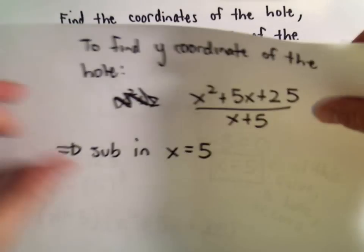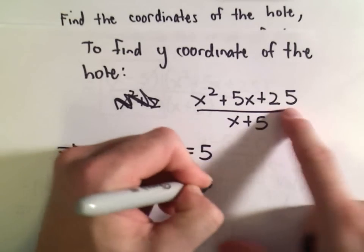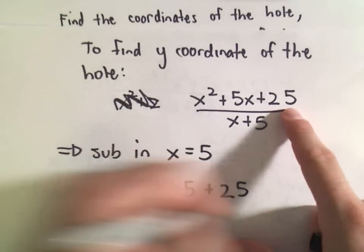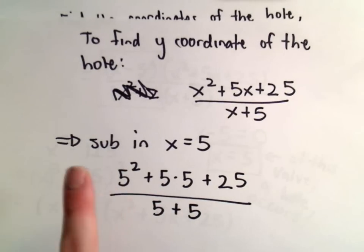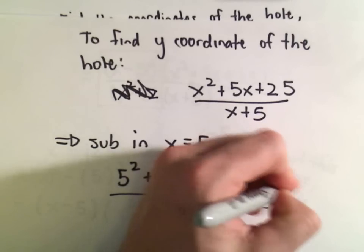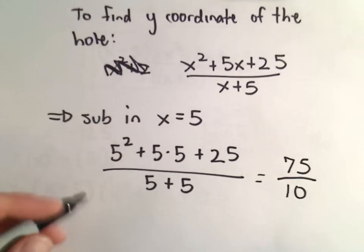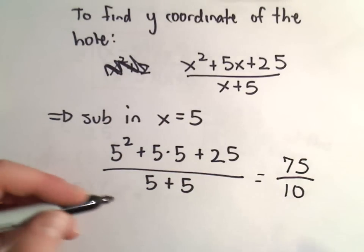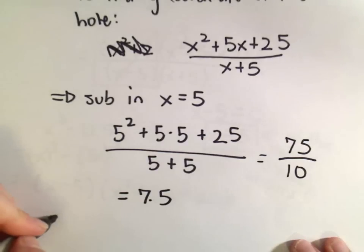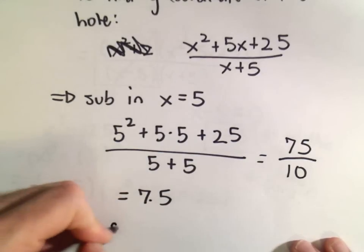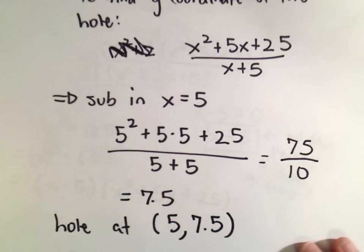That'll tell you the y coordinate. So if we plug in 5, we would get 5 squared plus 5 times 5 plus 25 over 5 plus 5. Well, that's 25 plus 25 plus 25, which is going to be 75. 5 and 5 is 10. So that's going to be 75 over 10, that's going to be 7.5. So it says the coordinates of the hole, the hole will be located at 5, 7.5 on our graph.